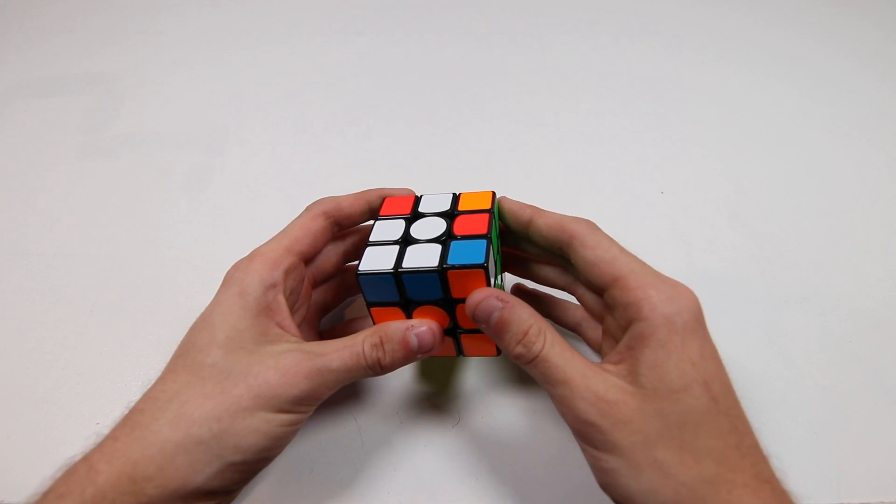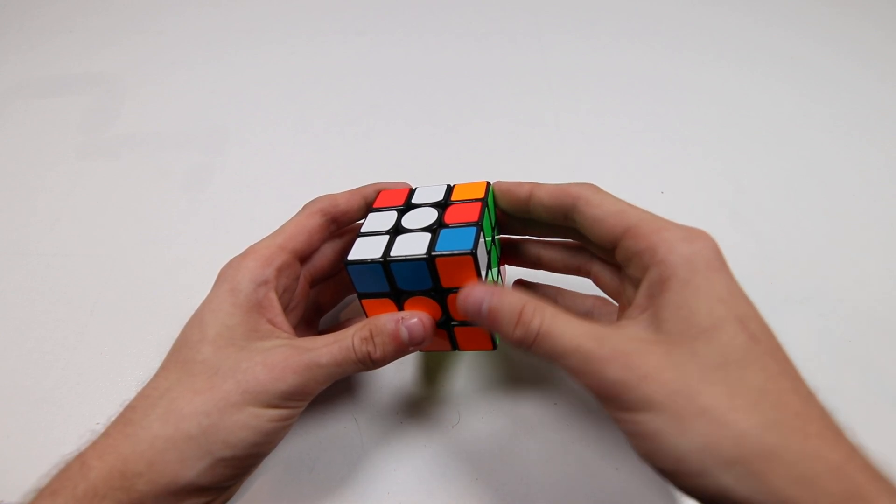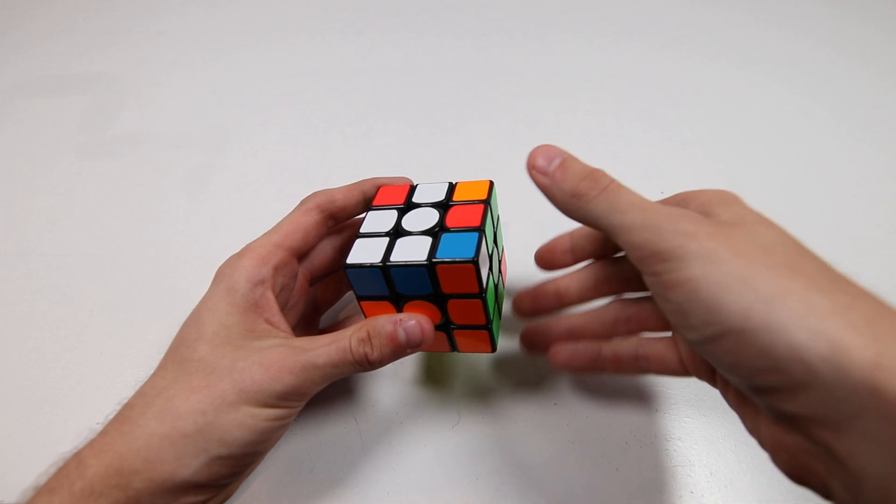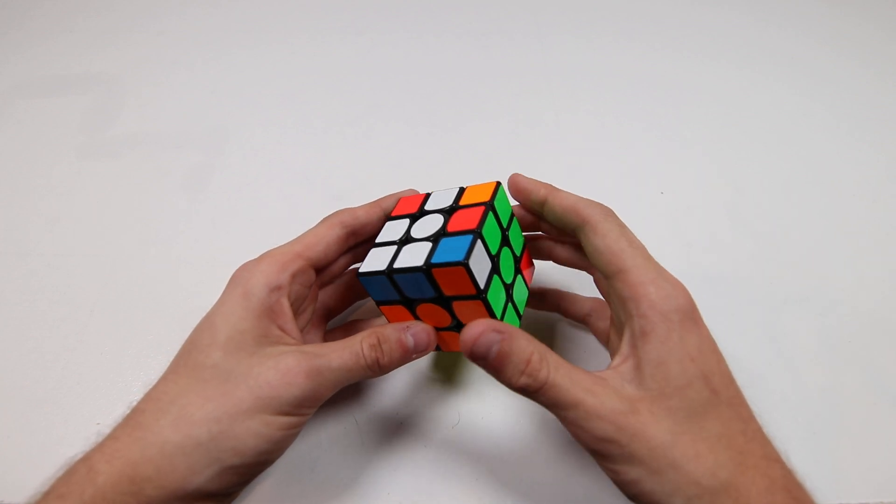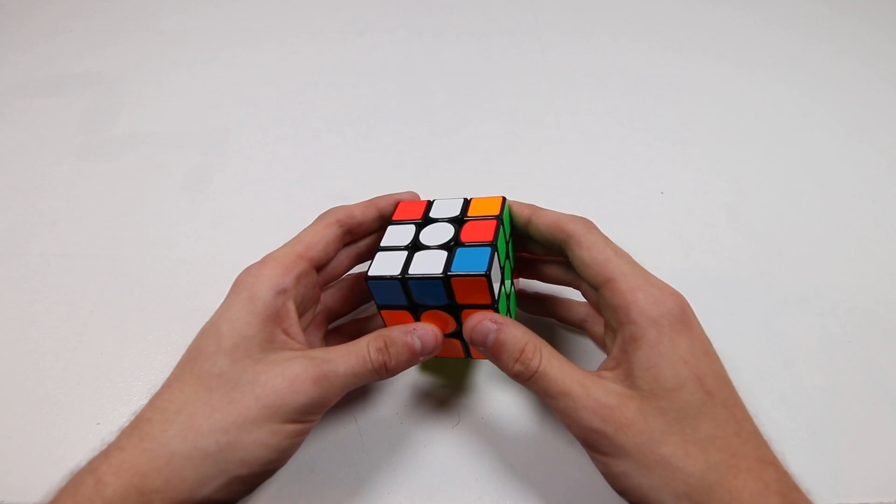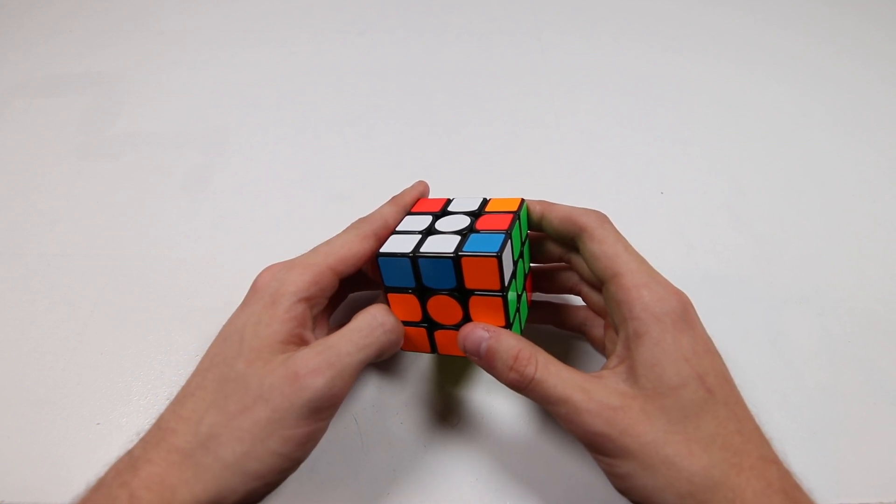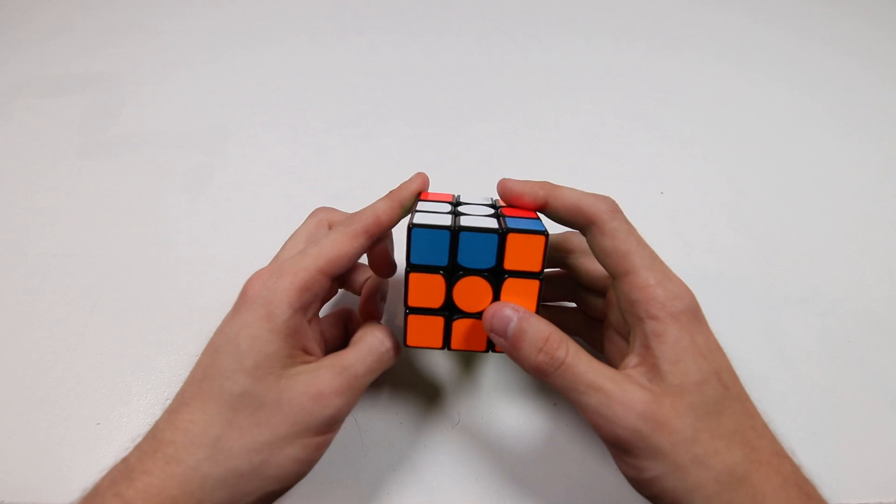So normally I would re-grip the whole hand, fingers go on bottom, thumb goes on top like that. But what I've kind of realized lately and haven't really talked about on this channel is that a lot of the time, and it seems like pretty much all the time, this is something I've been trying to work into my solves.